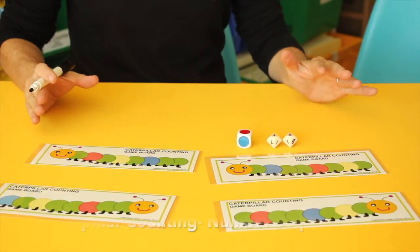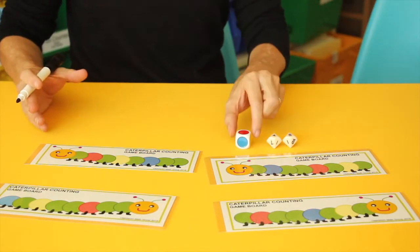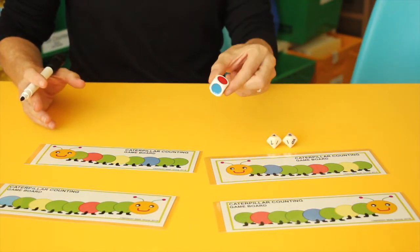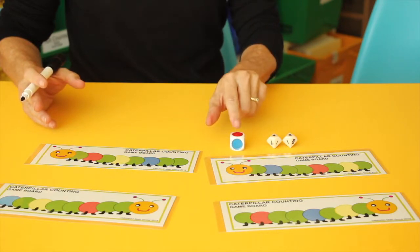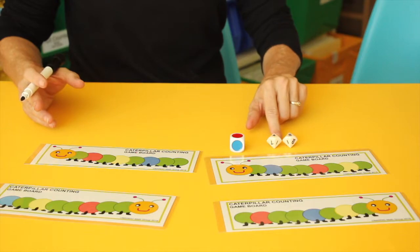Caterpillar Counting has students working on their number sequencing up to a hundred. They will roll a colored dice which has red, yellow, and blue on it, and whatever color they roll, that's where they're going to write their number. In this case they rolled the number 46.